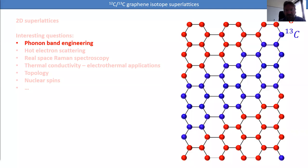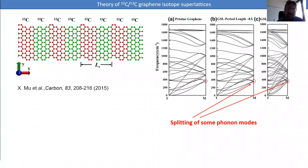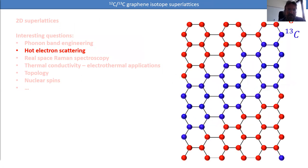The program covers: first, phonon band engineering — seeing what happens when you create a superlattice with carbon-12 and carbon-13. This is quite recent; until now there have been theoretical simulations on relatively small-sized structures showing some signatures of band splitting in the phonon spectrum at certain positions in momentum space. I'll discuss that experimentally and more of our work there.